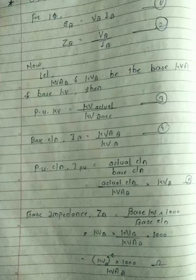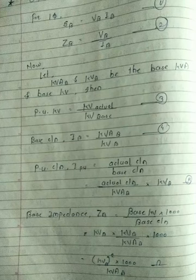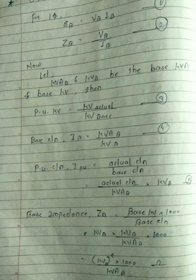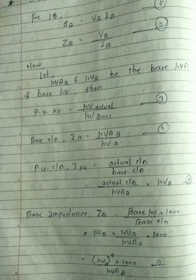To calculate the per unit value of current, the formula is: per unit current equals actual current upon base current. Substituting expression four (I_b = kVA base / kV base), we get: per unit current equals actual current multiplied by kV base, divided by kVA base. This is expression number five.